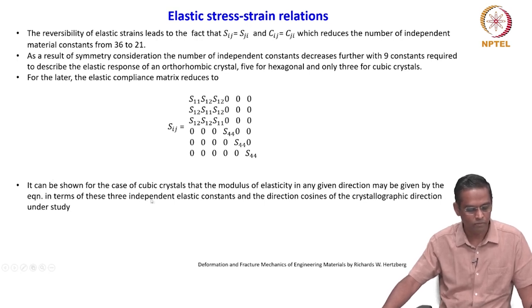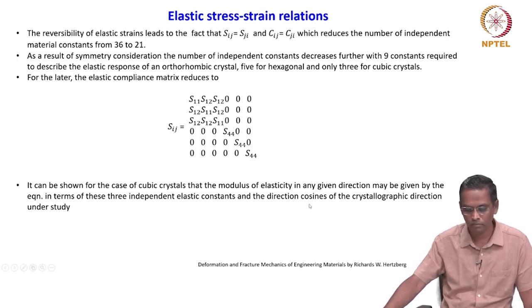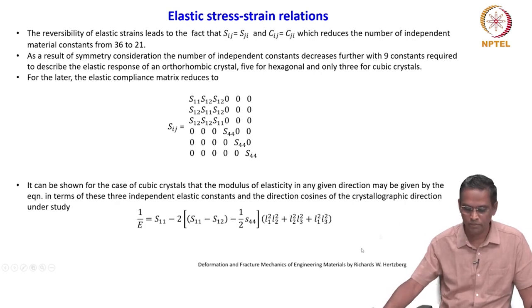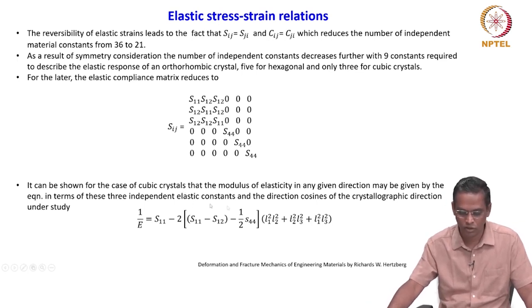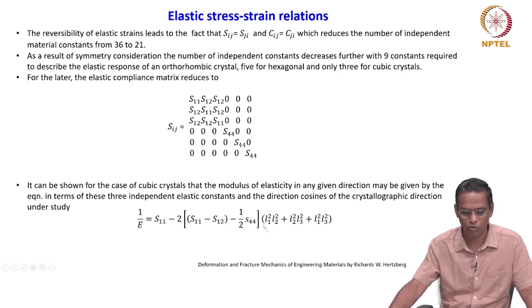It can be shown that for cubic crystals, the modulus of elasticity in any given direction may be given by the equation: 1/E equals S11 minus 2 times (S11 minus S12 minus half S44) multiplied by (L1²L2² plus L2²L3² plus L1²L3²), in terms of these 3 independent elastic constants and the direction cosines of the crystallographic direction under study.